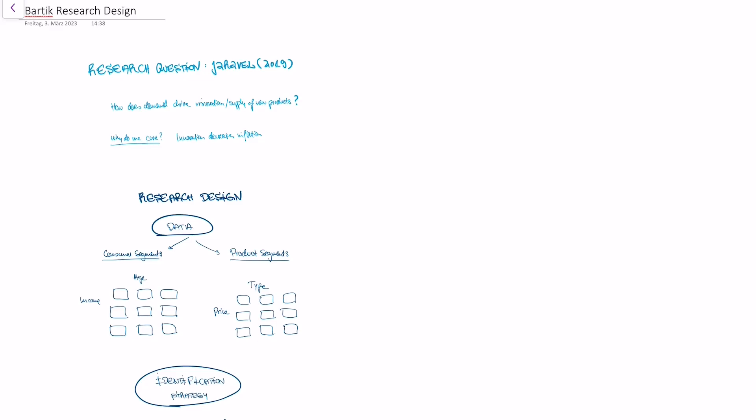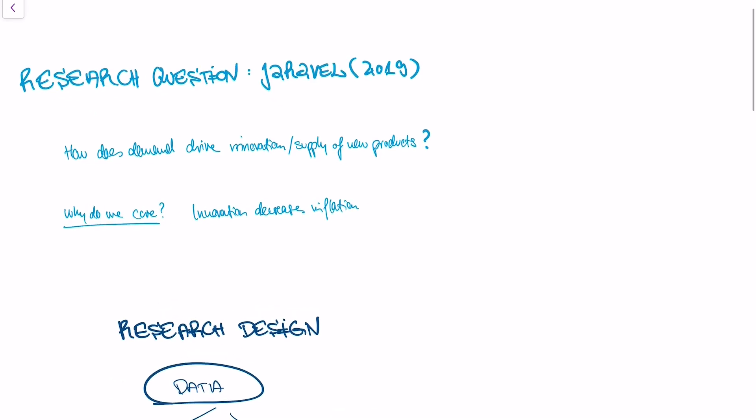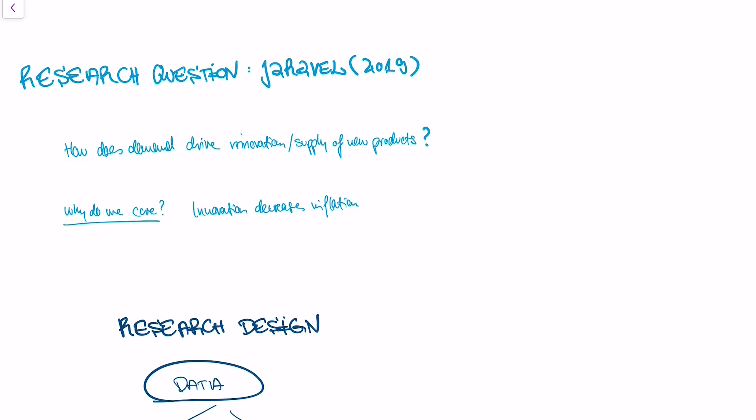Today we're talking about the BARTIC research design or the shift-share IV estimator, which is a very influential method in economics right now, often used to understand if supply drives demand or if demand drives supply. I'm going to use one specific example, a paper by Jaravel in 2019 who uses this research design. So what's the research question of this paper? The paper asks, how does demand drive innovation or the supply of new products?